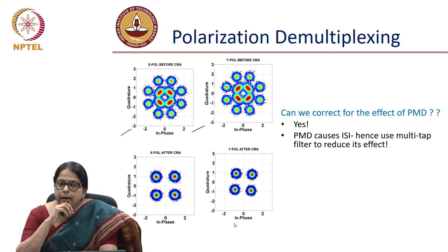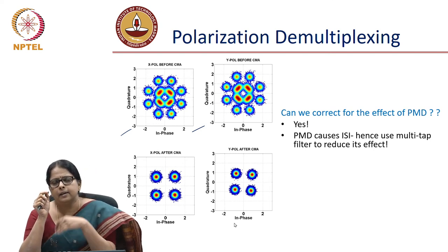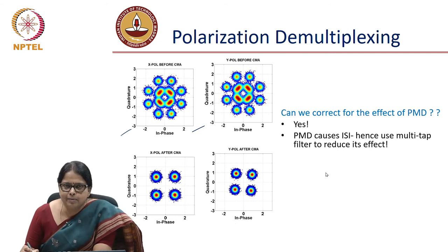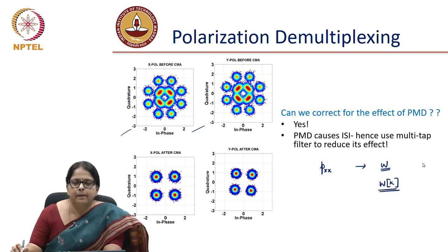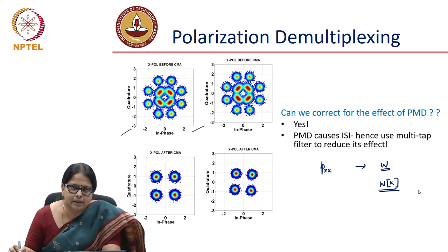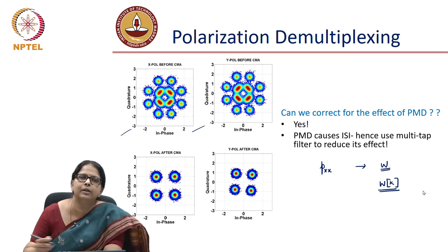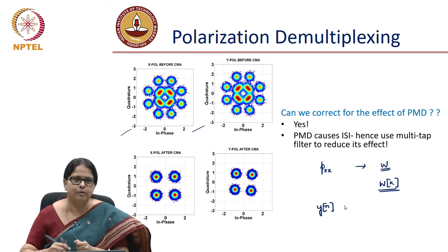The answer is yes, simply because polarization mode dispersion acts like a FIR (finite impulse response) filter, where the impulse response is of finite duration. This means the value of the present symbol is decided by the values of a couple of neighboring symbols depending on how much dispersion there is. The way to handle PMD is to say that instead of a single-element filter tap, you use a matrix of K elements, where the number of taps is decided by how many symbols are affected by PMD.